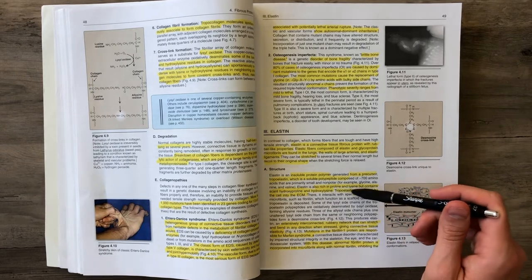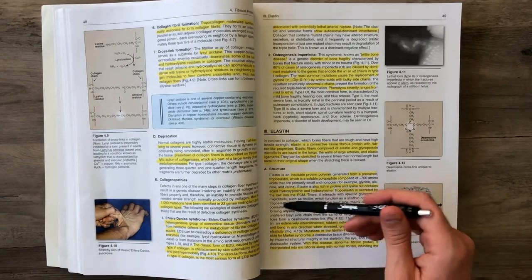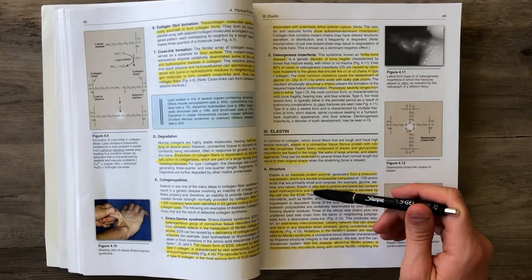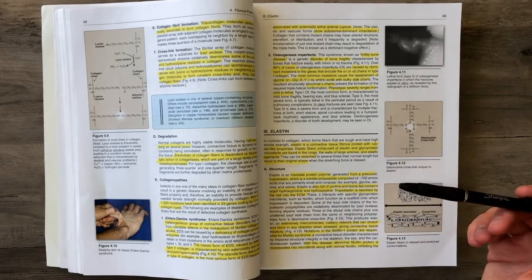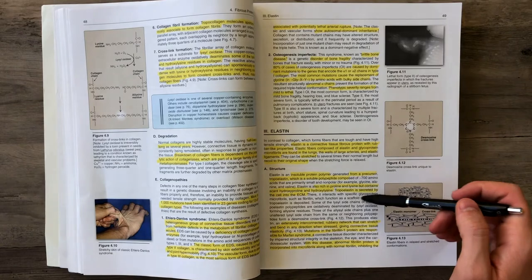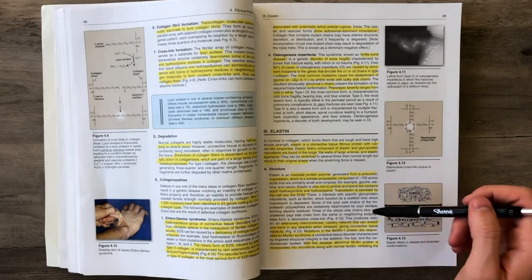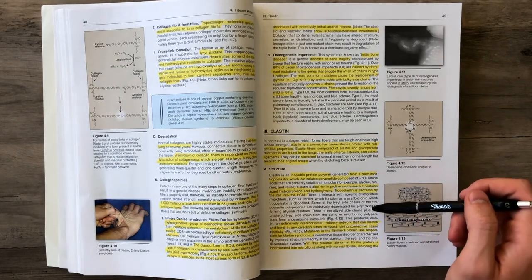It gets formed into tropoelastin that gets secreted into the extracellular matrix, where it then gets produced into elastin when it interacts with glycoproteins and with some action with lysyl oxidase as well.